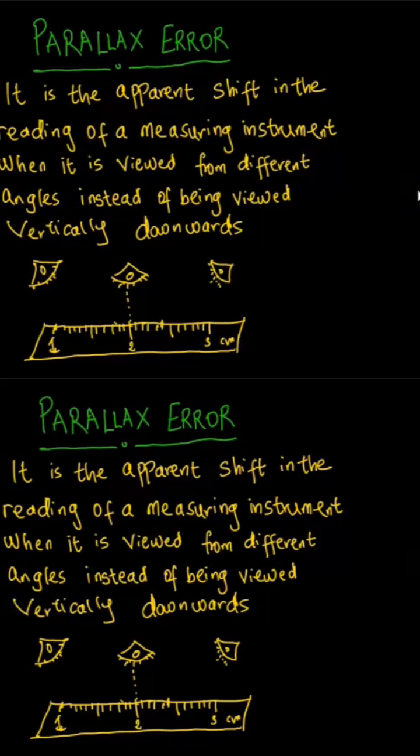In this video I'm going to explain parallax error and estimated uncertainty. Let's begin by looking at parallax error, which is popularly called 'error due to parallax' by students during physics practical examinations.